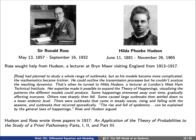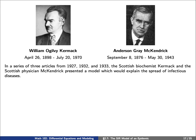Hudson and Ross wrote three papers in 1917, An Application of the Theory of Probabilities to the Study of A Priori Pathometry, Parts 1, 2, and 3. This idea of a priori pathometry actually eventually became mathematical epidemiology. Approximately 10 years after these papers, there were a series of three articles written by a Scottish biochemist named William Kermack and a Scottish physician named Anderson McKendrick. They presented a model which would explain the spread of infectious diseases in a slightly more general way.